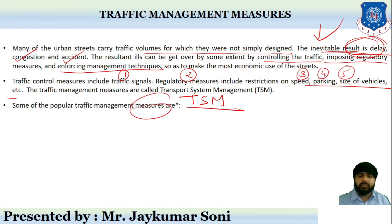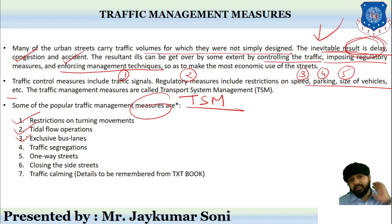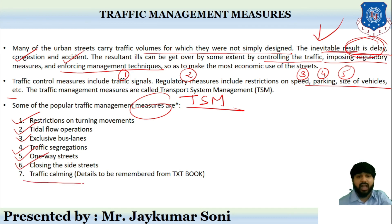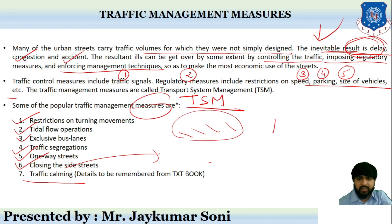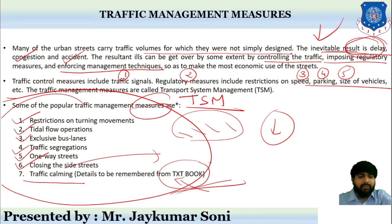Some popular traffic management systems include: restriction on turning movements, tidal flow operation, provision of exclusive bus lanes, traffic segregation, one-way streets, closing side streets, and traffic calming — where enforcement and regulatory measures are applied so that traffic is automatically calmed. You should go through this topic from the textbook in detail. This concludes Part 3 on Traffic System Management. I hope you have understood the concept thoroughly. Thank you.